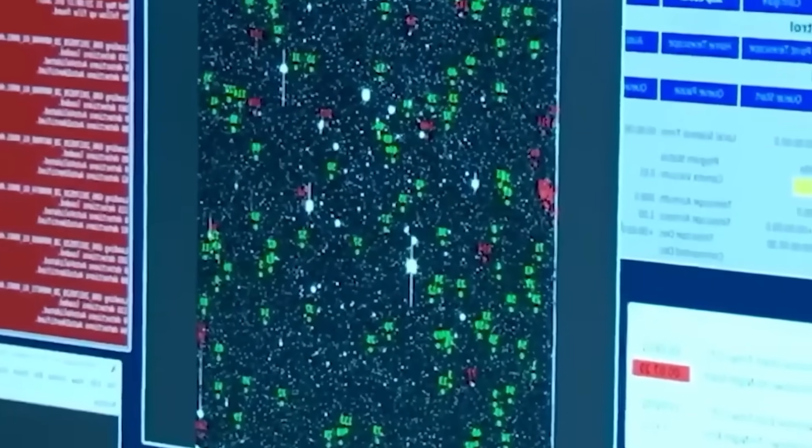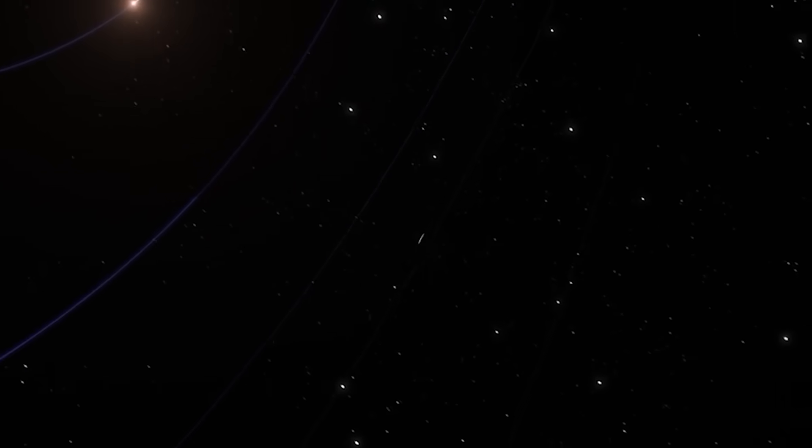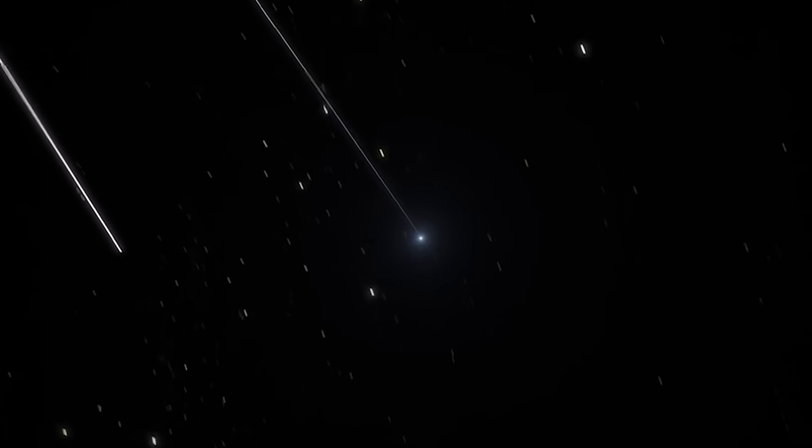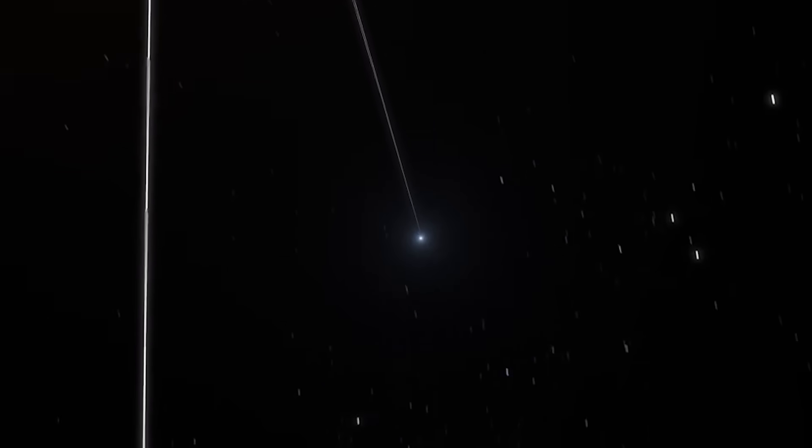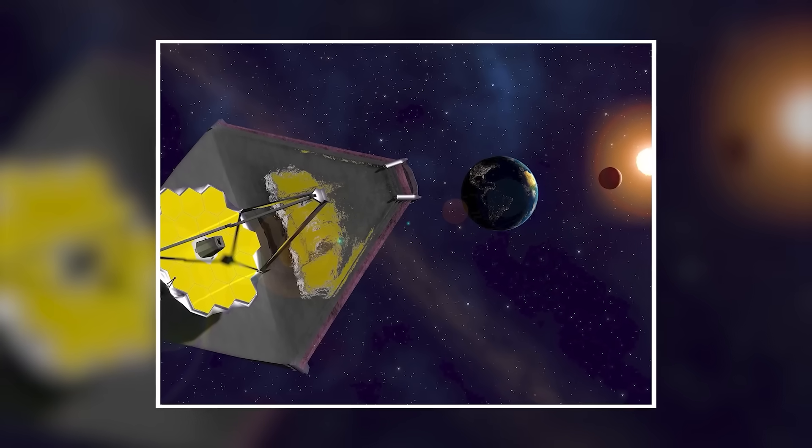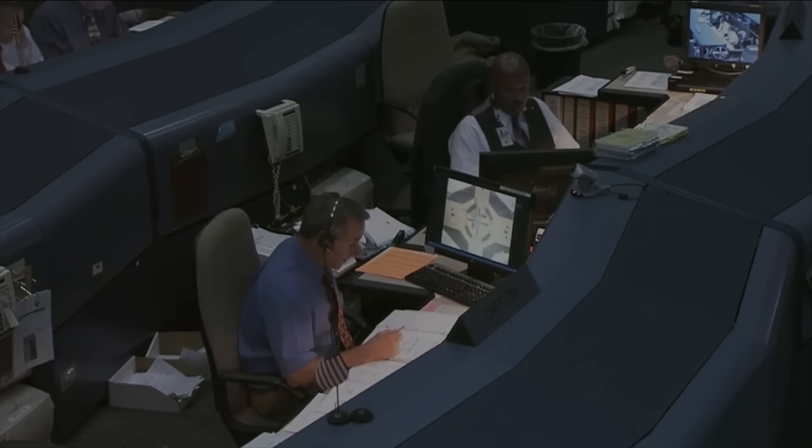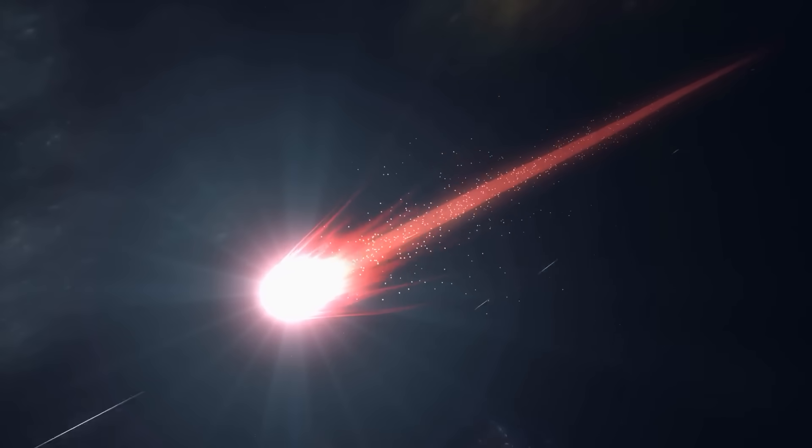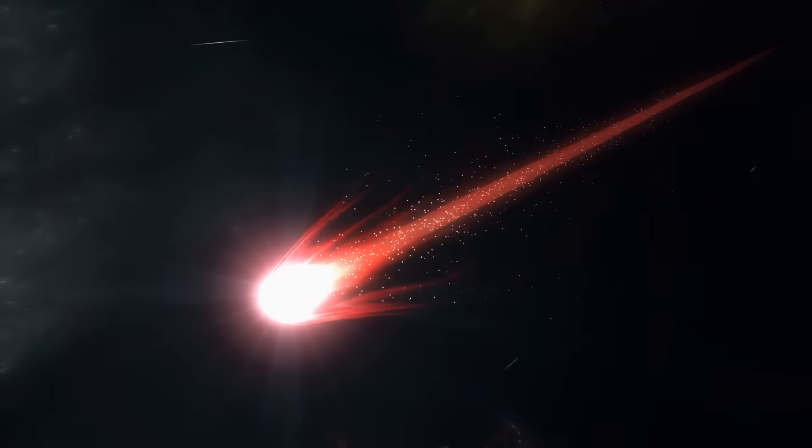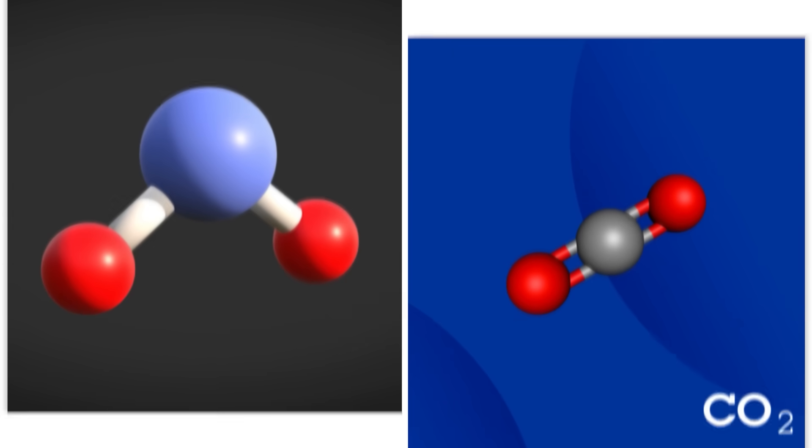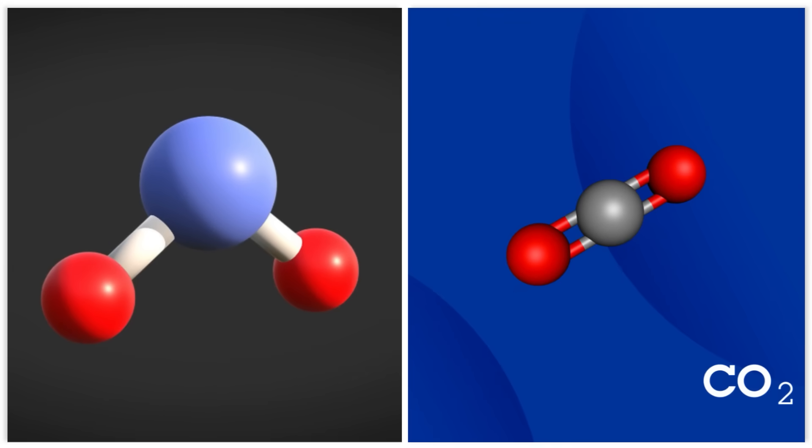And the truth it revealed about 3i Atlas is a genuine jaw-dropper. The first images came back, and they didn't show the typical fuzzy glow of a normal comet. Instead, Webb saw a tight, focused plume, a jet. And when the scientists analyzed the chemical signature of that jet, they found something that has no business being in a comet. The data was undeniable. The gas shooting out of 3i Atlas was composed of a ratio of eight parts carbon dioxide to one part water.